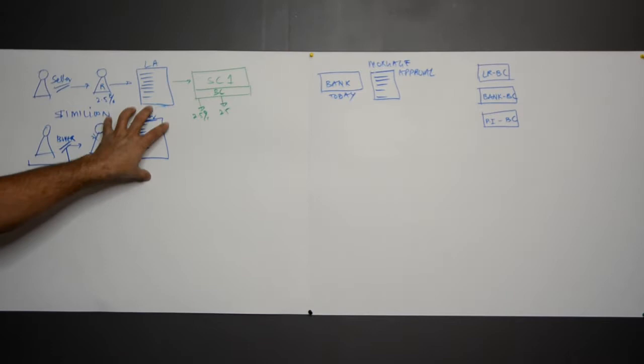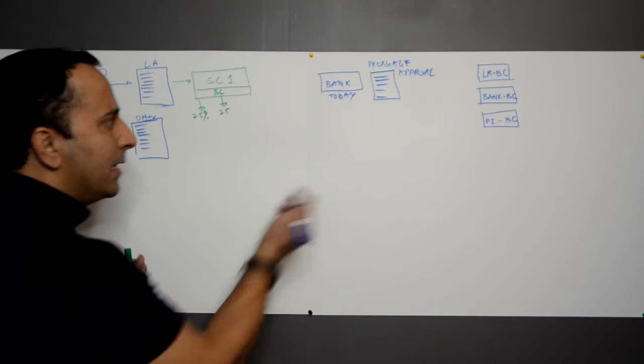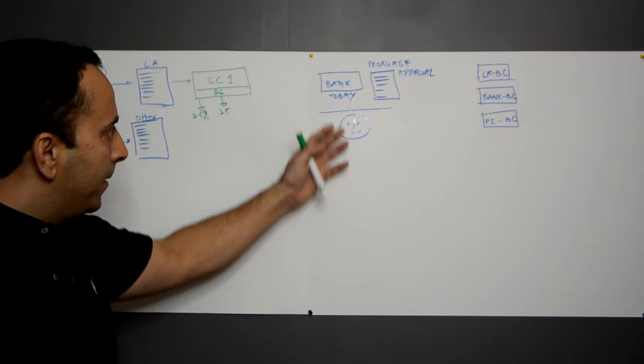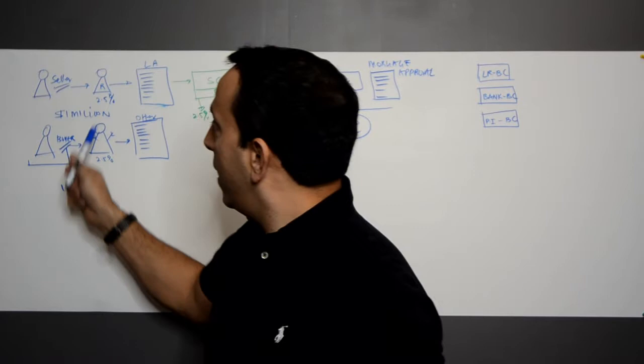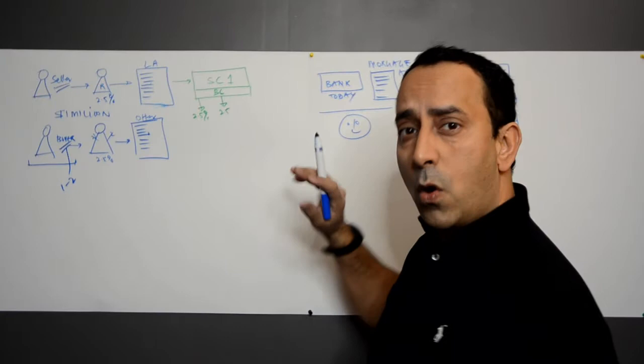Right now we're dealing with a lot of manual filling out of documents — this is all manual work. Let's say the bank gives the approval. The real estate agents, these two people working hard on your behalf, are going to collect all the documentation — the listing agreement, the sales offer, the mortgage document — and all of these things are collected and given to your lawyer.